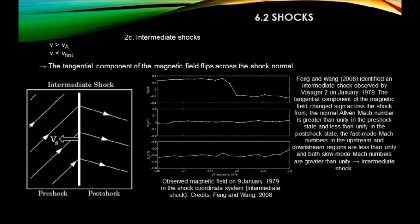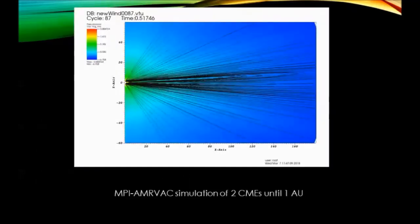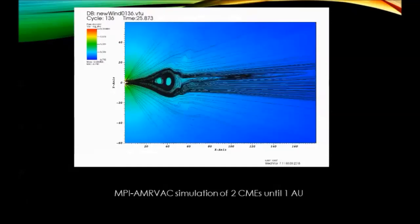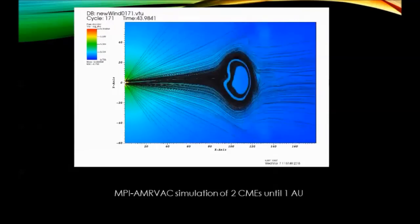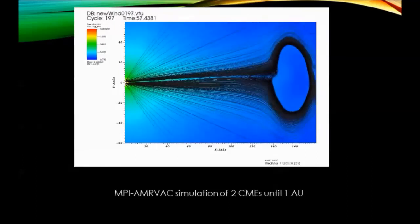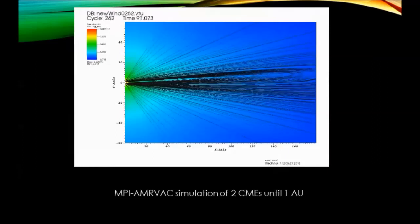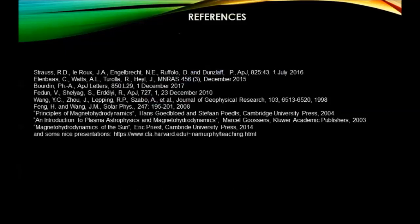A really cool example of what MHD can do: I am currently simulating CMEs in a modeled solar wind - slow at the equator, fast close to the poles - and creating CMEs whose field lines are shown as black lines. You can actually simulate the propagation of a blob of plasma from the Sun toward Earth. The blue color shows the logarithm of the density. Some references are provided if you want to go further into the topic.